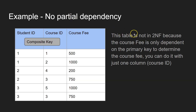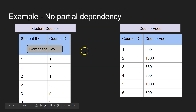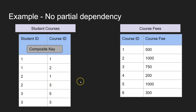To fix this, all we do is remove the course fee information to a separate table. We have a table about course fees where each course ID has a course fee attached to it — course 1 is 500, course 2 is 1,000, etc. The other table stays the same but without the course fee column, keeping only the student ID and the corresponding course ID. Student 1 is doing course 1, student 1 is also doing course 2, student 2 is doing course 1 and course 3, etc. So that is no partial dependency — it must be fully dependent on each part of the composite key.